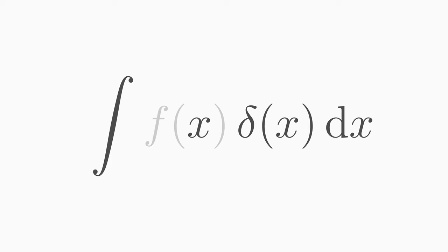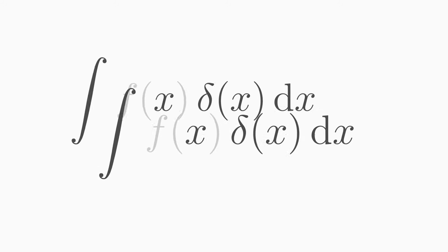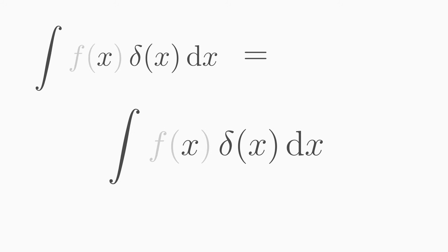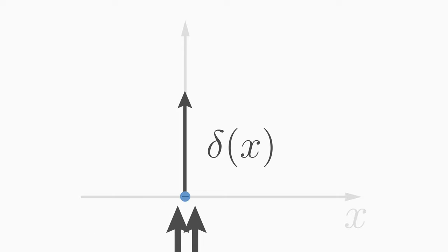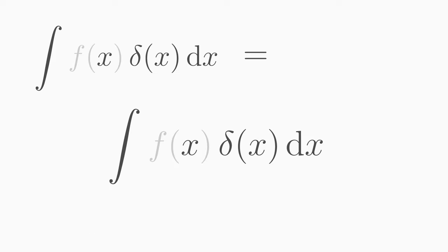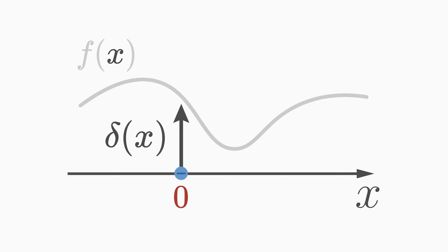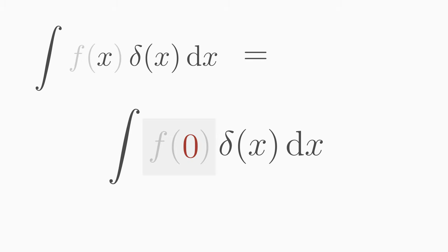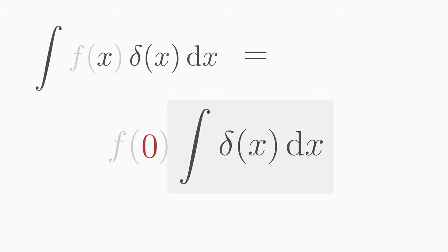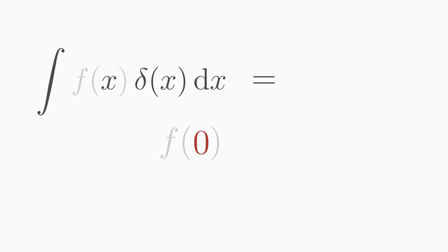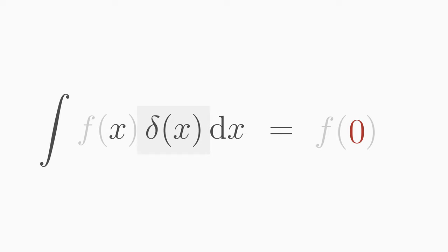Now let's consider an integral of the delta function together with another well-behaved function f. Such an integral is very easy to calculate, because the delta function is zero everywhere except at the point x equals zero. Thus, the product is also zero everywhere except at x equals zero. Only the function value f(0) remains. Since f no longer depends on x, we can place it in front of the integral. The integral over the delta function is one. So the delta function in the integral picks the value of the function at the position x equals zero.